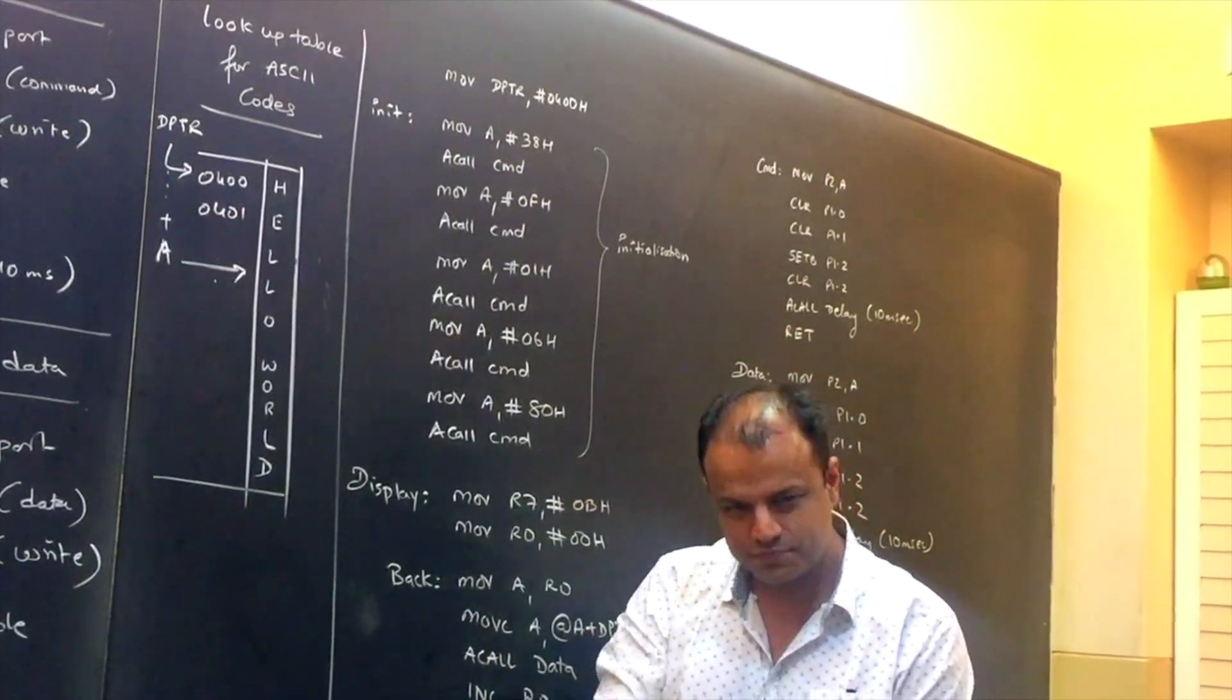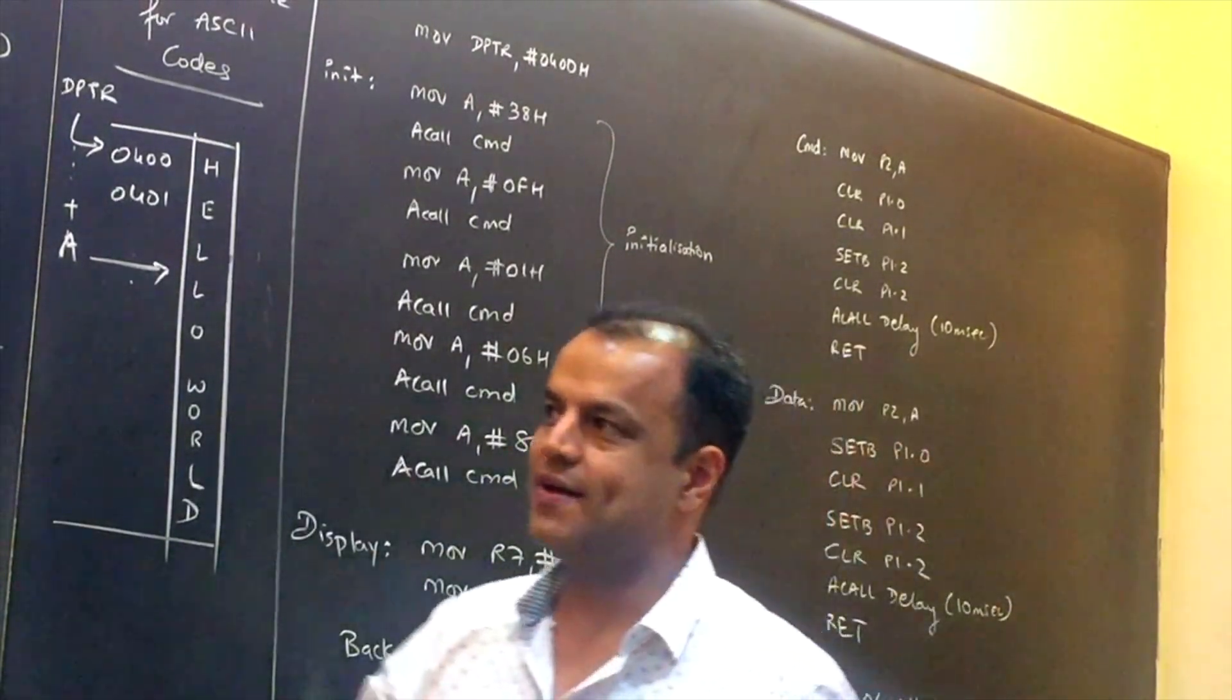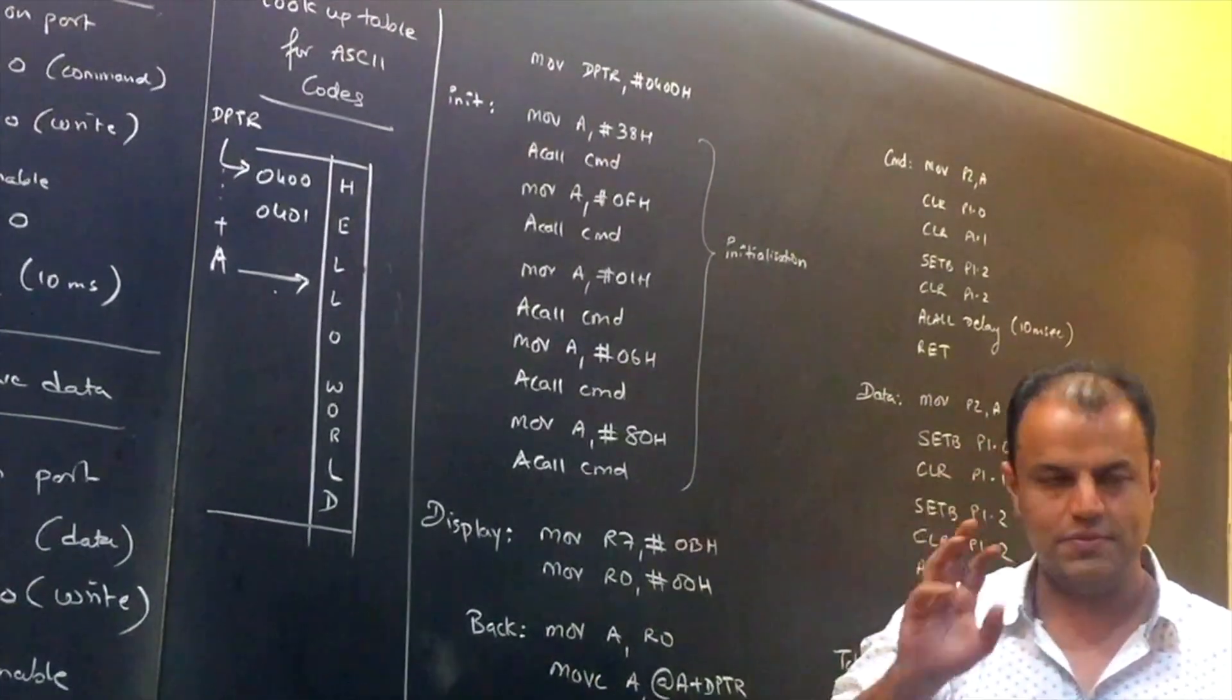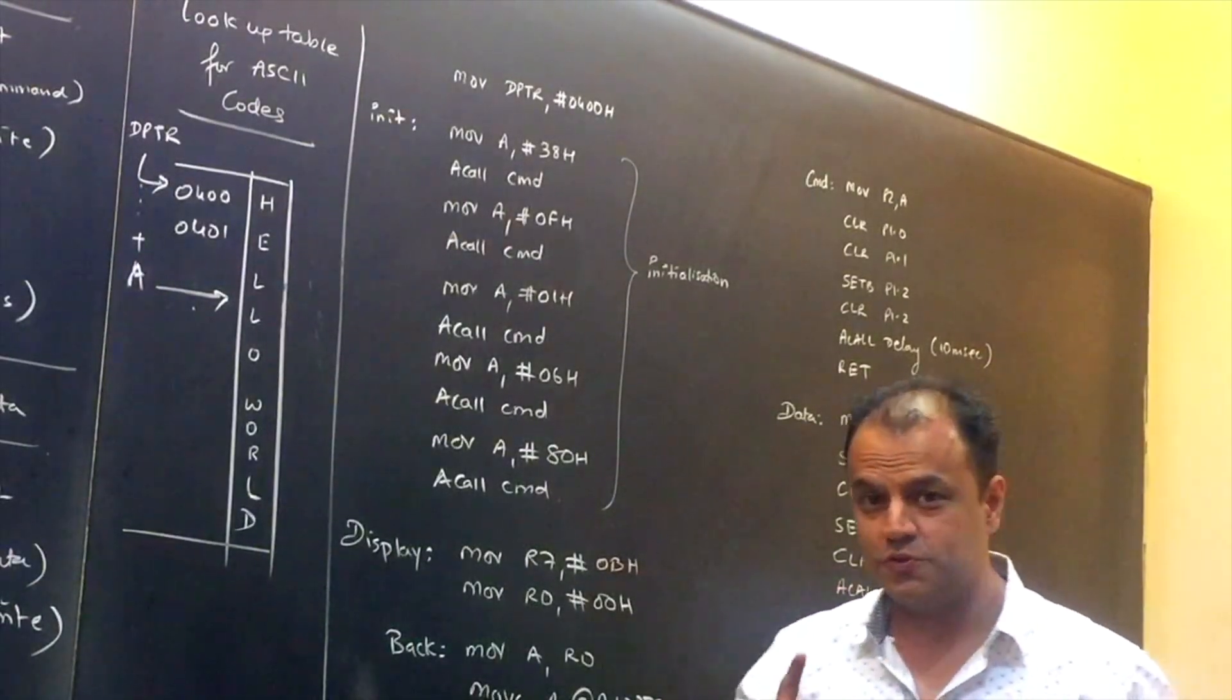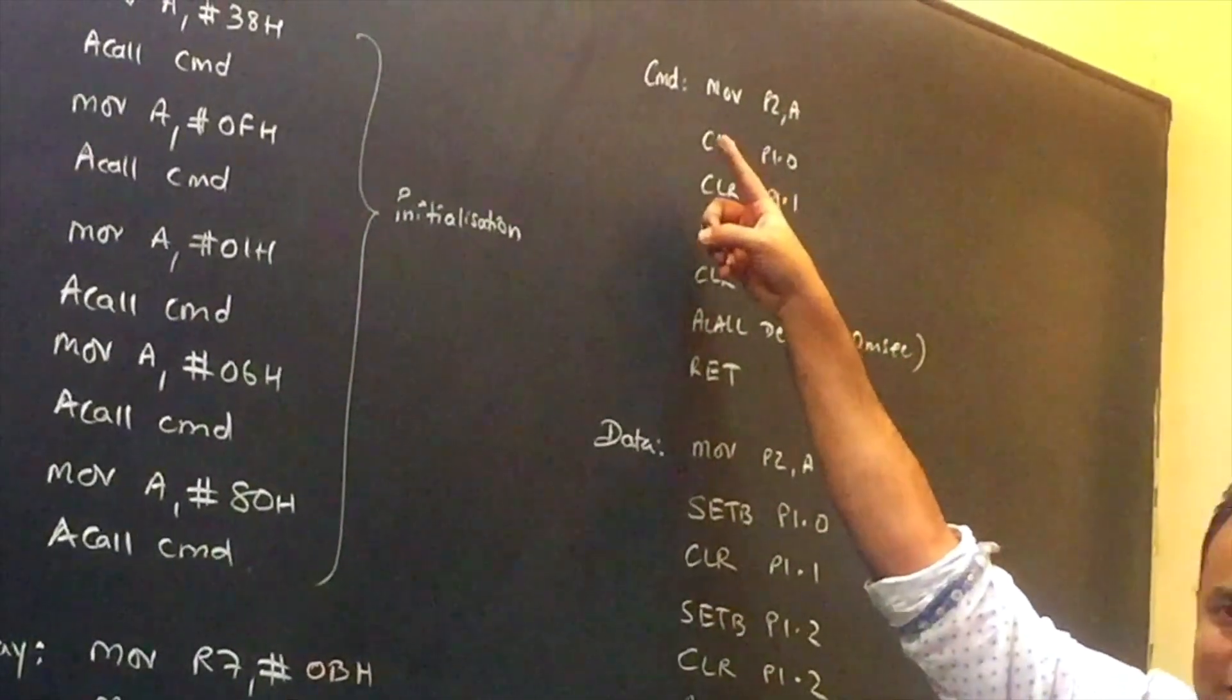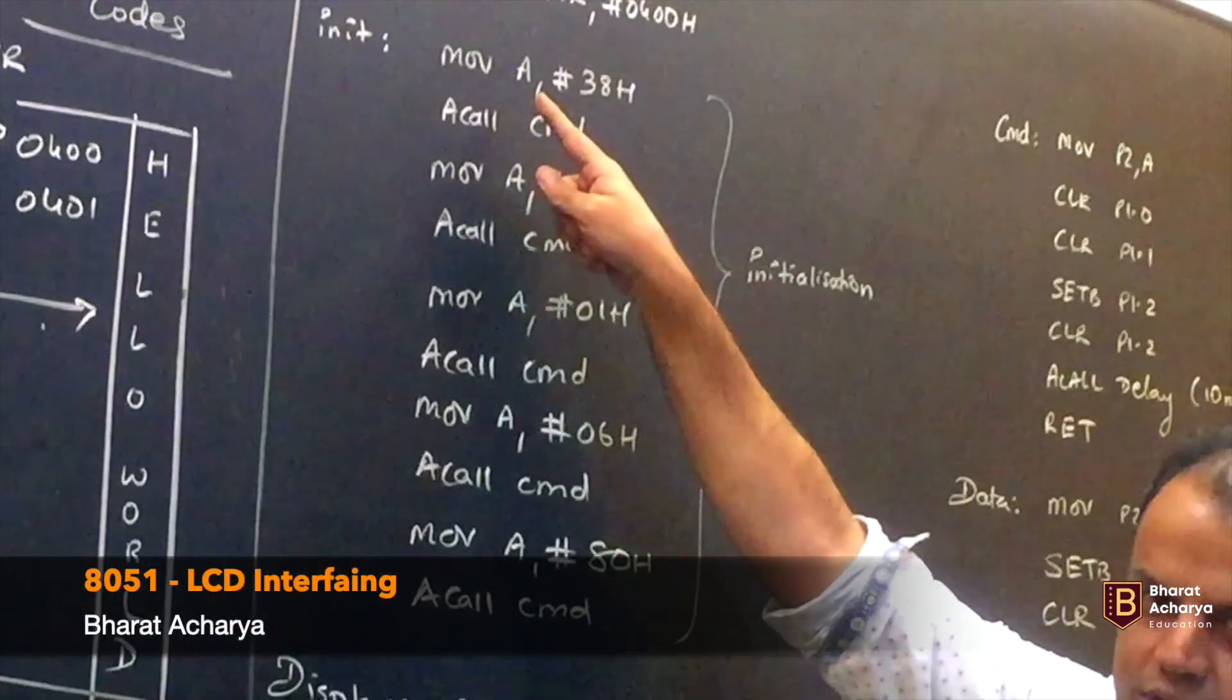This is your program. So initialize DPTR as the pointer to the lookup table. Now first thing you are going to do is initialize your display. Give those five commands: 38, 0F, 01, 06, 80. Now how do you give every command? There is a procedure which I just taught you. Give the command, make RS 0, make R/W 0, make latch enable 1 then latch enable 0 and delay. You need to do this procedure five times for all the commands. You are not going to write it five times. So make another function, a subroutine by the name command. It will give any command that is present in A register.